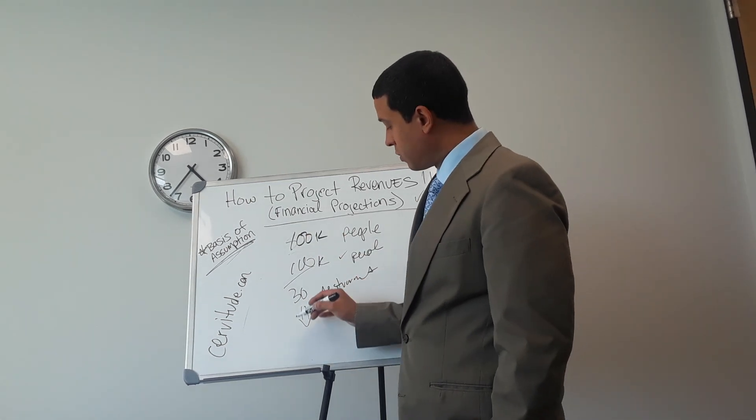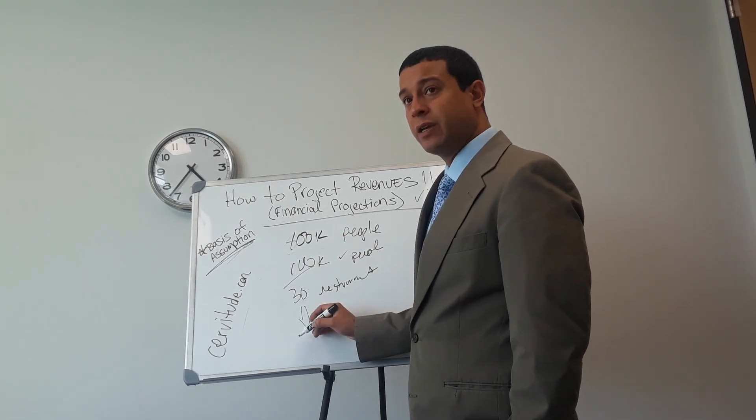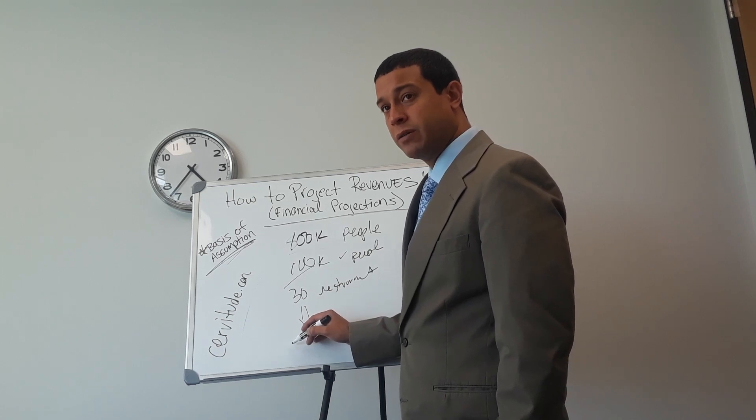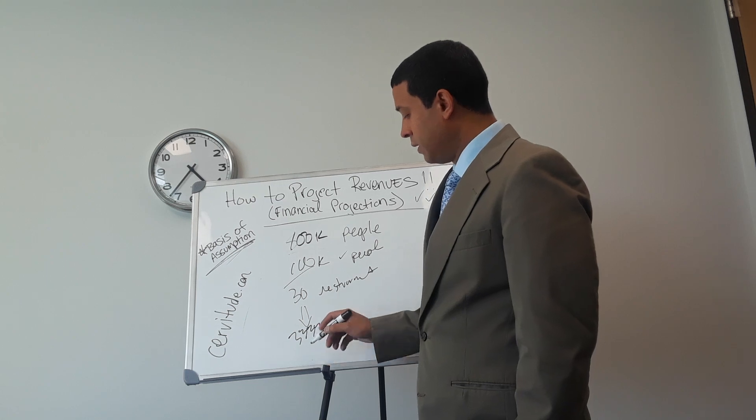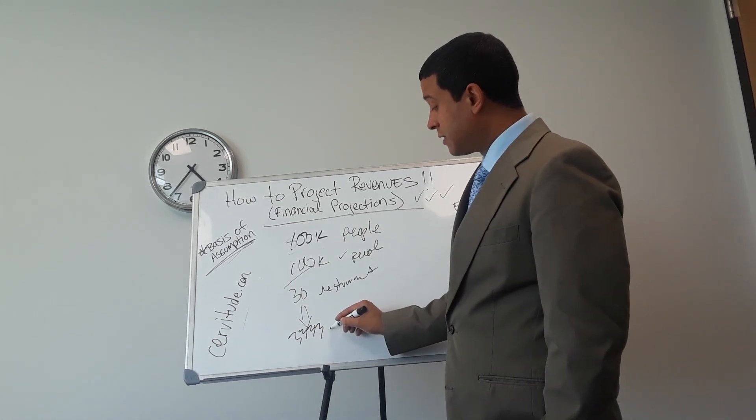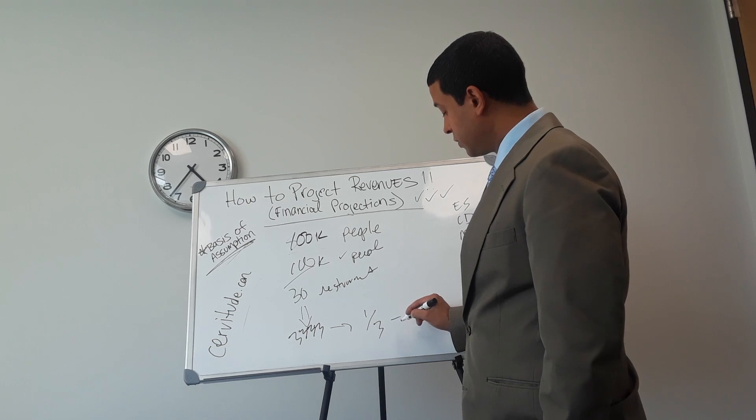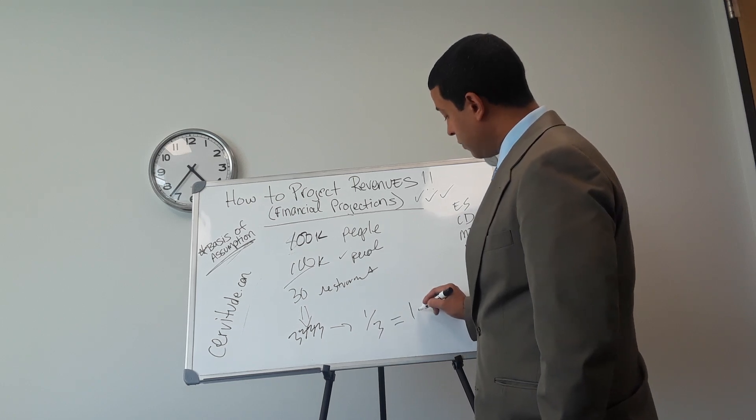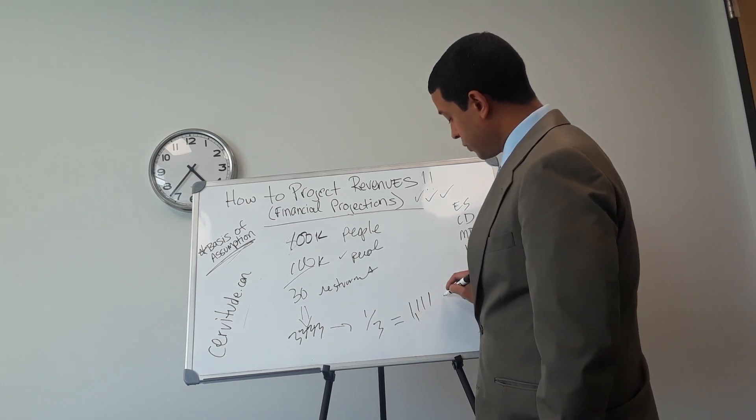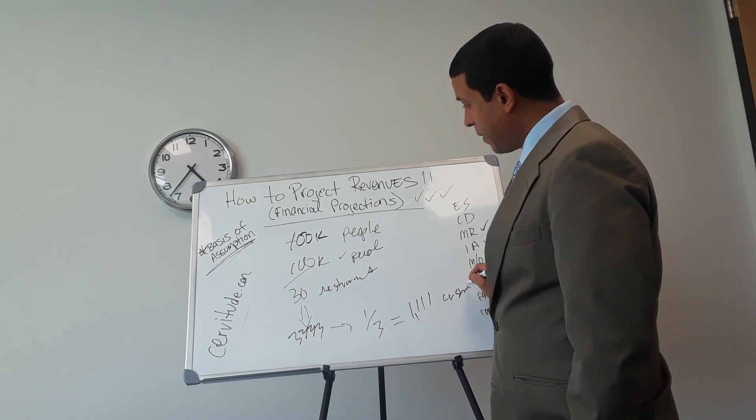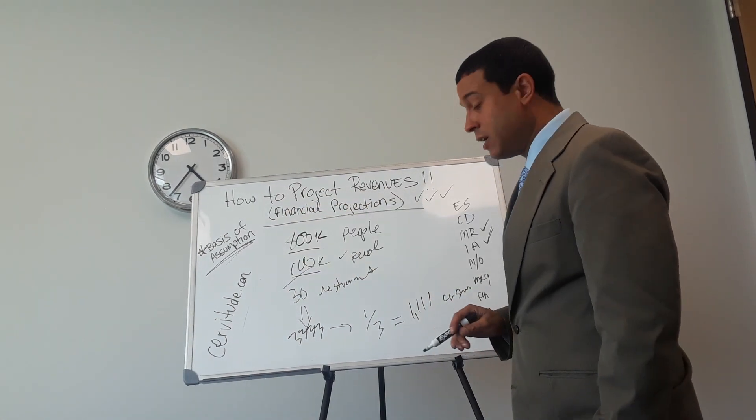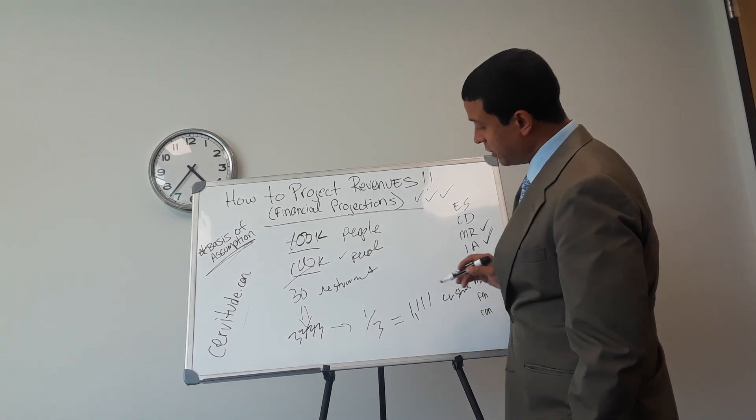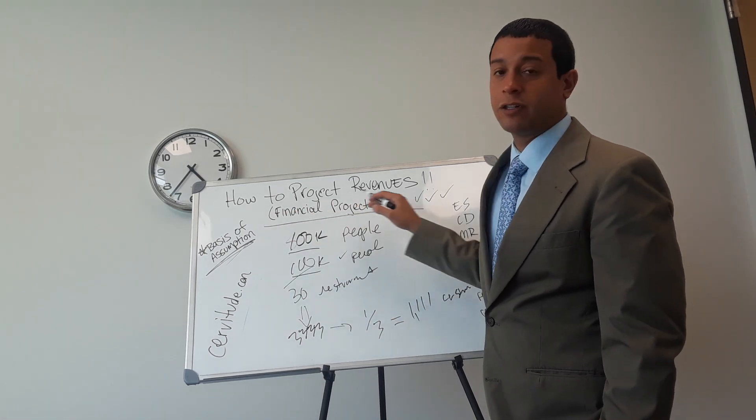So whatever this number is, call that divided by 30 - 3,333, whatever that number is. Now let's say you're going to get a third of this. So you're factoring you're going to get 1,111 customers. This is what I mean by a basis of assumption. You have to have some key underlying facts in your market research and industry analysis to get to your financial projections.